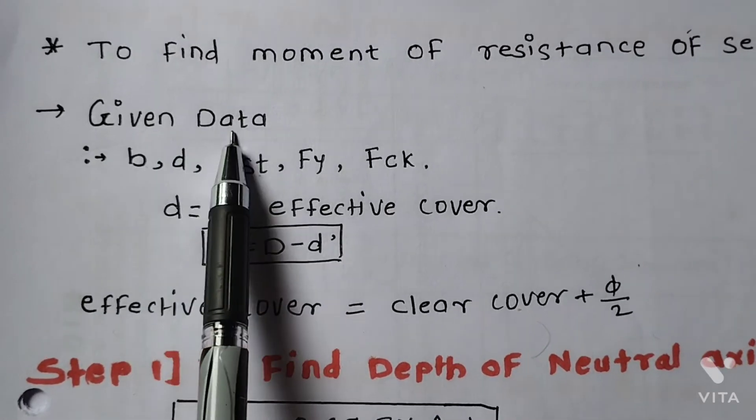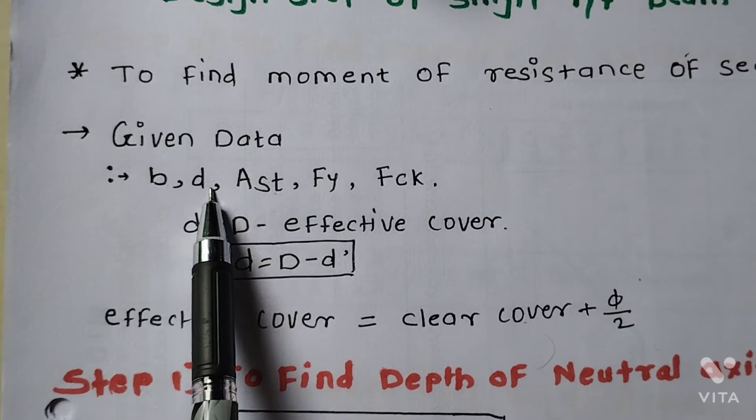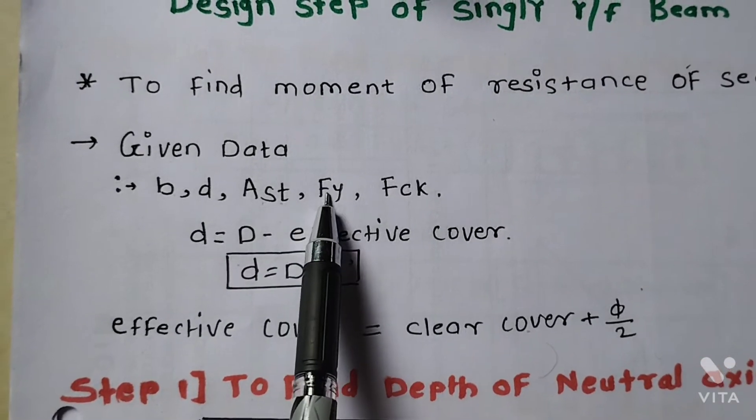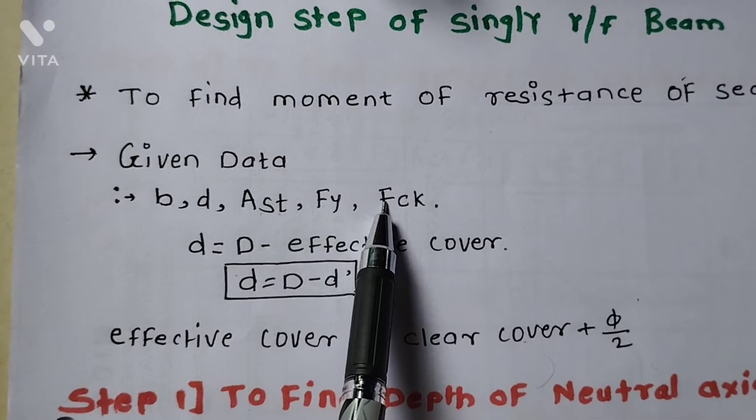First, given data: width b means width of the beam, depth of the beam, area of the steel, yield stress in the steel, and characteristic strength of concrete.